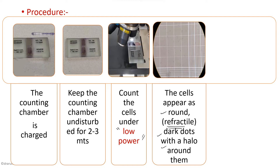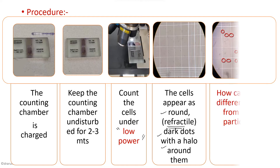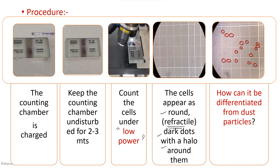A favorite question here will be: how will you differentiate a WBC from a dust particle? The characteristic feature is that WBCs will be refractile — they will have a halo around them. Whereas dust particles will not be refractile. That is how you distinguish them. We then count the WBCs present in the WBC counting area and perform the calculations.